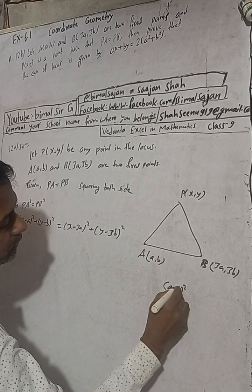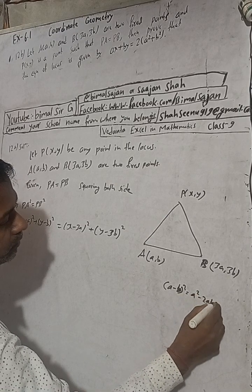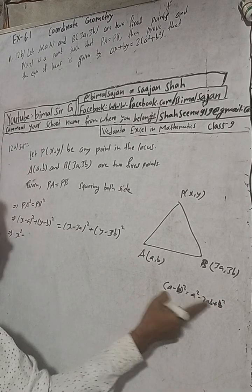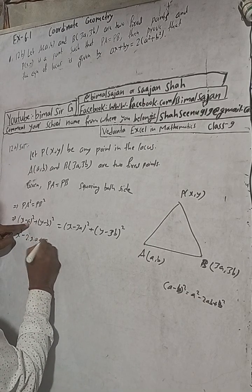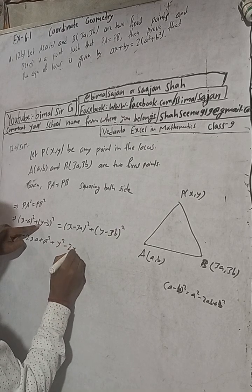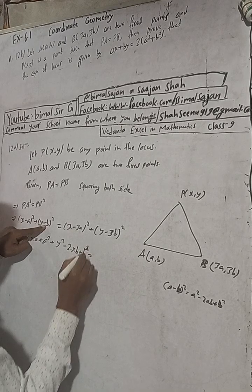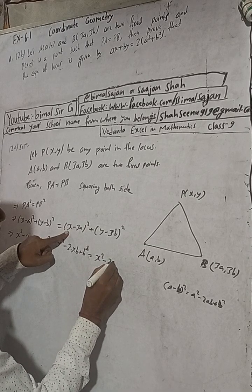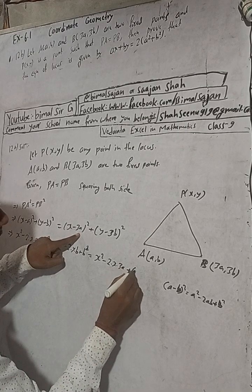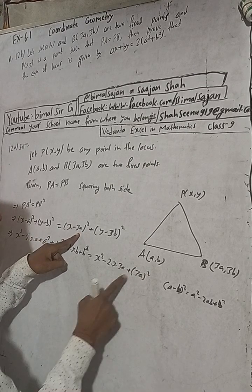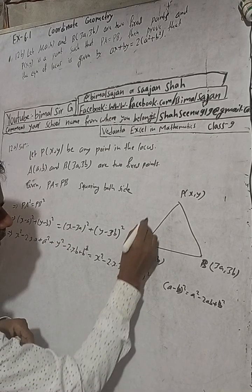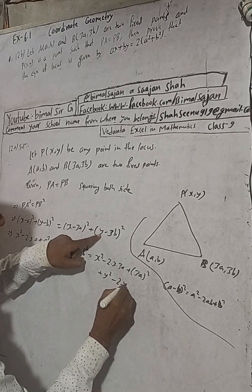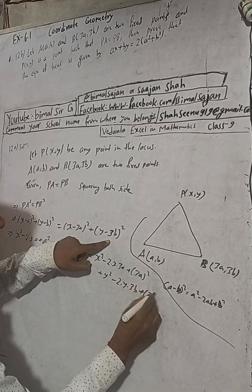For PA² we write (x − a)² + (y − b)² equals (x − 3a)² + (y − 3b)². Now we apply the formula (a − b)² = a² − 2ab + b². So expanding the left side: x² − 2ax + a² + y² − 2by + b². And expanding the right side: x² − 2(x)(3a) + (3a)² + y² − 2(y)(3b) + (3b)².